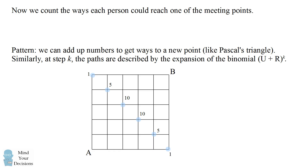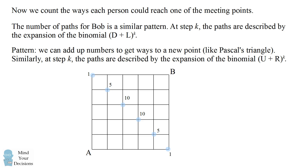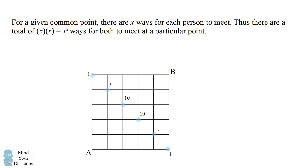By symmetry, the pattern is going to be exactly the same for Bob starting from point B, so we end up with exactly the same number of ways that Bob could reach these meeting points. His paths are described by the binomial expansion of (d + l) to the power of k, where d is down and l is left. For a given common point, if there are x ways for each person to get there, the total number of ways both could be there is x squared.